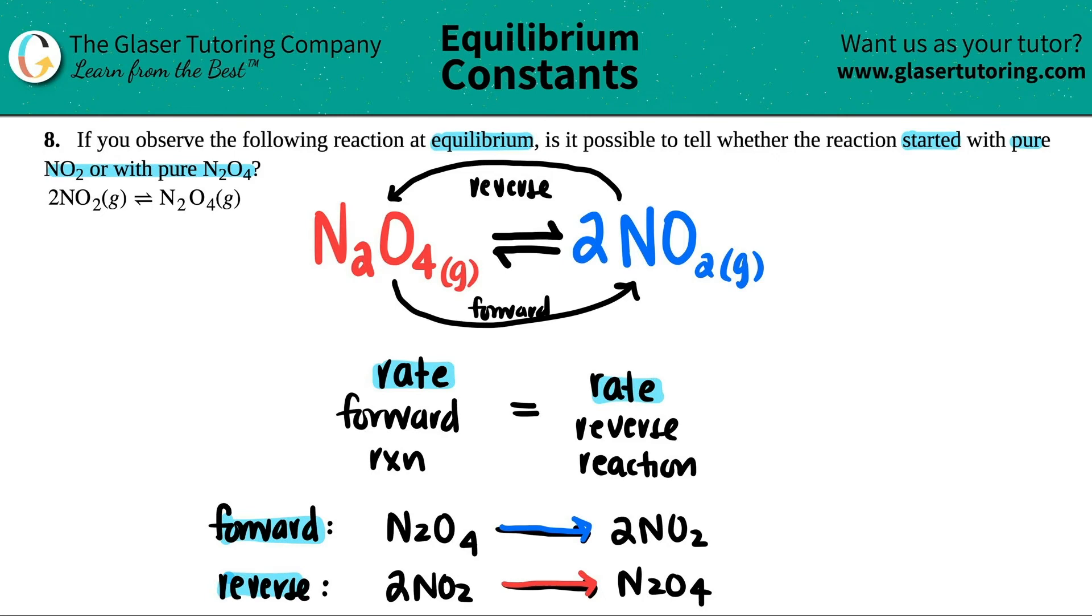All I know is that I have some amounts of both of them at equilibrium. I have some amounts of N2O4, I got some amounts of NO2, and one is trying to go one way and the other one's trying to go the other way. But I can't tell what you started with. You're already at equilibrium, so you can't determine that.